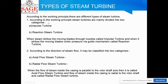According to working principle, steam turbines are mainly divided into two categories: impulse turbine and reaction turbine. In an impulse turbine, steam strikes the moving blades from a nozzle. In a reaction turbine, steam strikes the moving blades under pressure via a guide mechanism. This is the basic difference between impulse and reaction turbine.